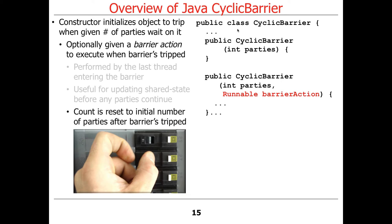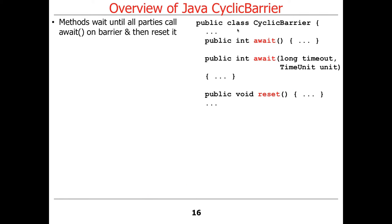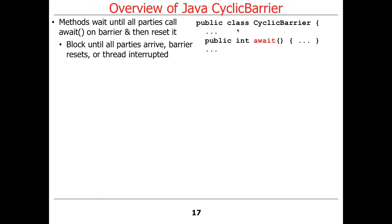The count is reset to the initial number of parties after the barrier is tripped. So after everybody showed up and you're all done, it resets back to the initial number of parties and you can continue on again. The methods are really simple. Await is the most common thing to call, and it waits until all the parties arrive, the barrier is reset, or the thread is interrupted.